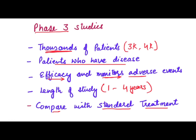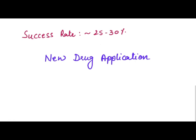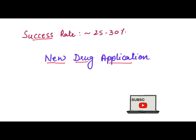Now let's see how effective phase three studies are. The success rate is around 20 to 30 percent only — again, the attrition rate is very high. If the drug is safe in phase three, then a new drug application can be filed. In our next video, we will study how this new drug application is processed.